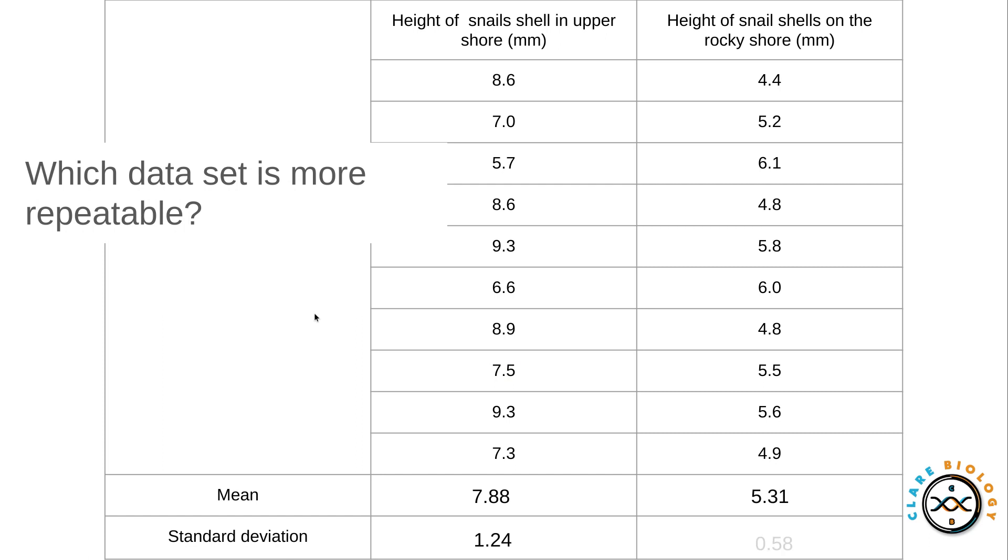So here's some data set just having a look upon which one is more repeatable. The one that is more repeatable is this one here because it has the lowest standard deviation and therefore the spread of the data around the mean is going to be higher. You're going to have a closer spread of the data around the mean.